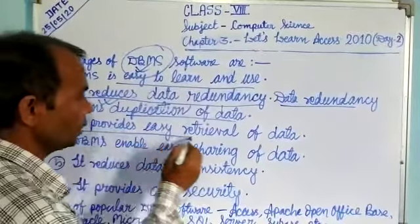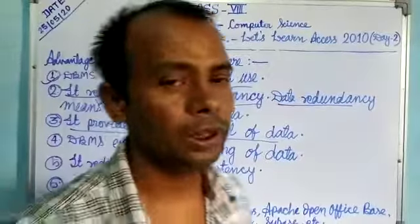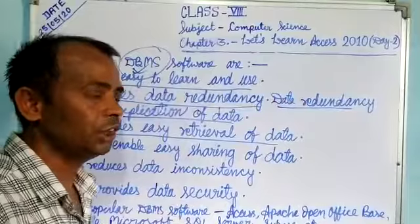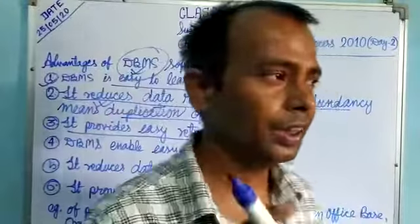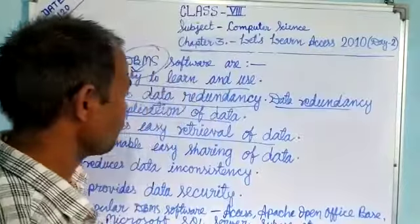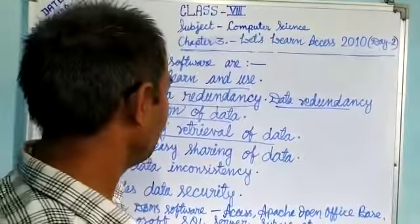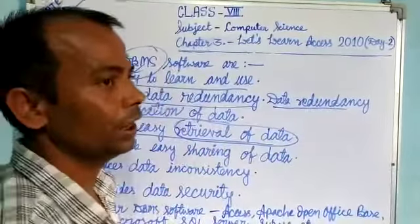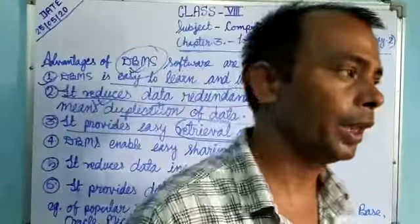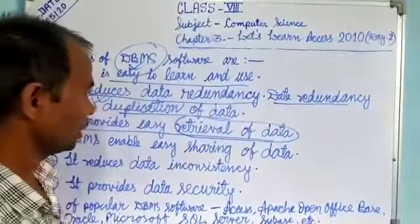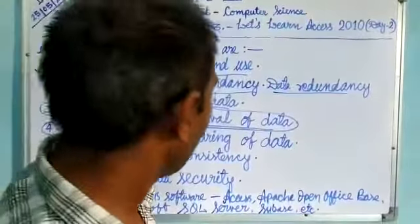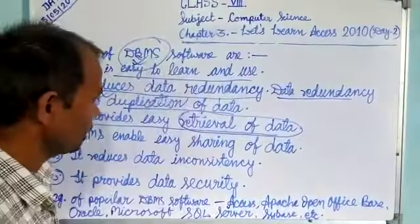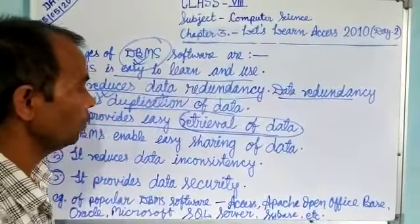DBMS provides easy retrieval of data. In a database we have large collections of data, but at any given time we only need a piece of that data. We set conditions or criteria, and based on those criteria, we are able to retrieve only the specific information or data we need. So through DBMS, we can very easily retrieve the data.